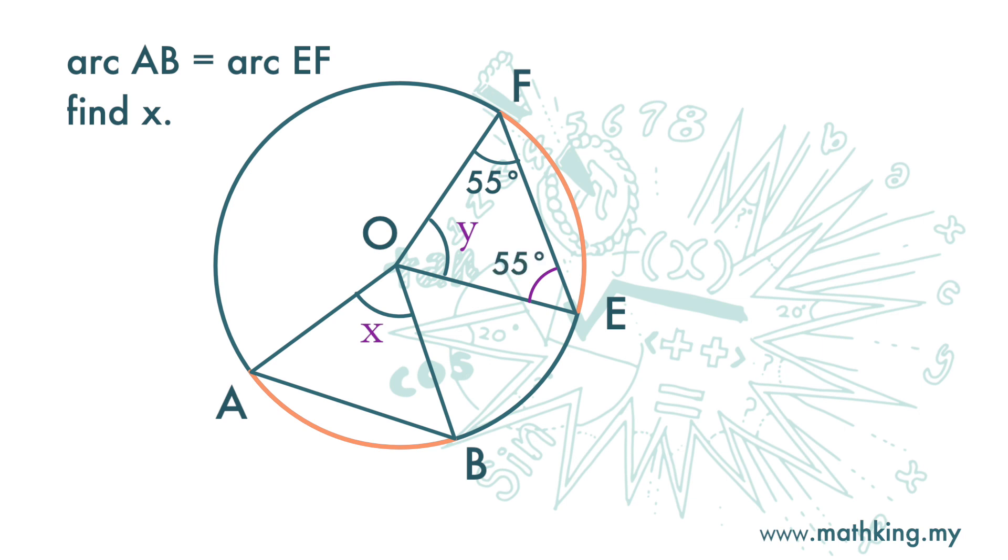The sum of interior angles of a triangle is 180 degrees. So y is 180 minus 55 times 2, which is 70 degrees. Therefore, x is also 70 degrees.